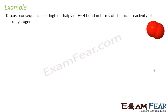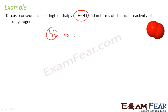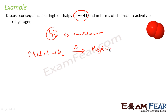Let us discuss the consequence of high enthalpy of the H–H bond in terms of chemical reactivity of hydrogen. H₂ is unreactive at room temperature, but if you increase the temperature to above 500 Kelvin it becomes reactive. At high temperature, hydrogen reacts with metals to form hydrides. This is because the high H–H bond enthalpy makes it unreactive at room temperature, but increasing the temperature breaks the bond and the reaction takes place.